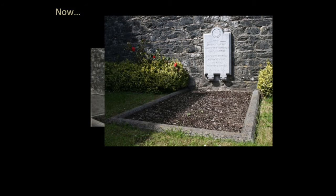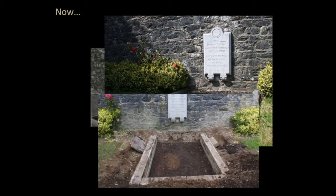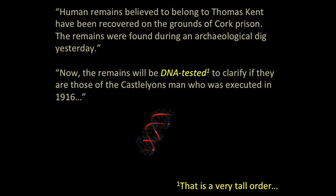What happened in 2015 is that they were going to do some work on Cork prison, as it was no longer going to be used. So they sent archaeologists there to try to locate the grave of Thomas Kent. This is how it looked before the archaeologists started digging, and this is how it looked after. A brown mark in the grave suggested someone had dug through it before. They found the remains of a person there, and it came out in the news that human remains believed to belong to Thomas Kent had been recovered, and that the remains would now be DNA tested.